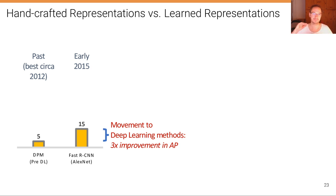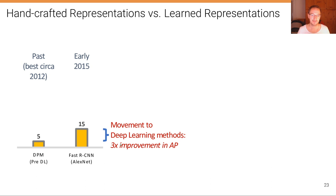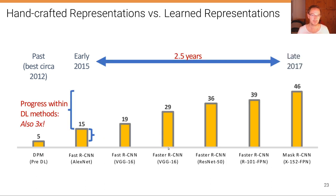While the performance of object detection techniques plateaued from 2005 to around 2010, with the deformable part-based model performing at around only 5% mean average precision, the first deep learning based models such as Fast RCNN using a simple backbone like AlexNet already gave a three-times improvement in average precision. Then within two and a half years of development of deep neural network based detection methods, we got another factor-of-three increase. There has been tremendous progress within a very short period of time.